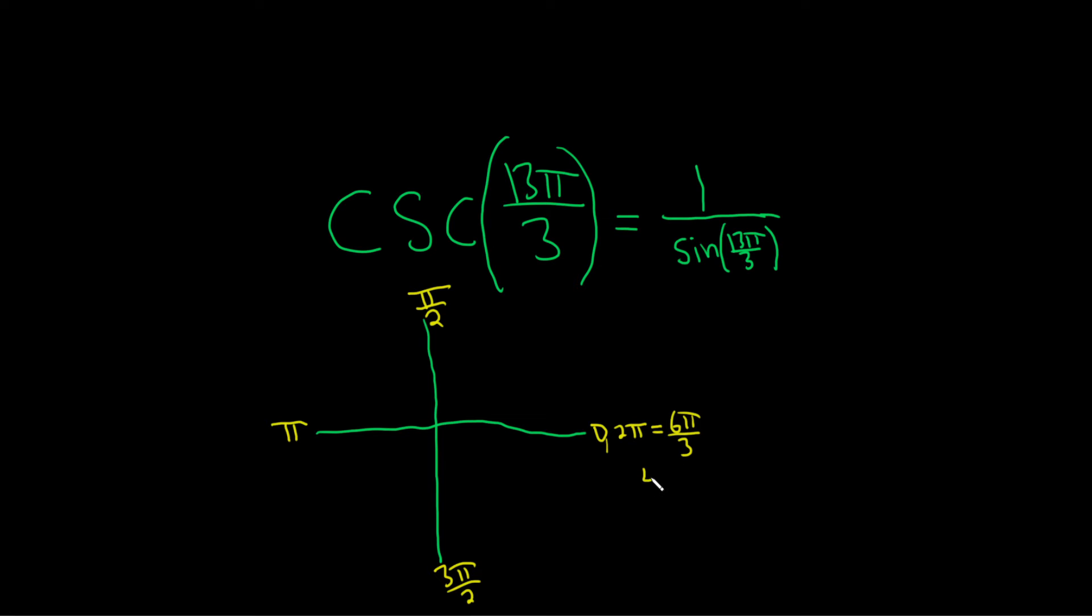What if we go around twice? That'll give us 4π, which as a number over 3 would be, I think, yeah, 12π over 3.